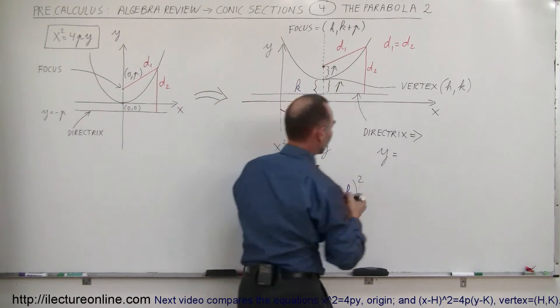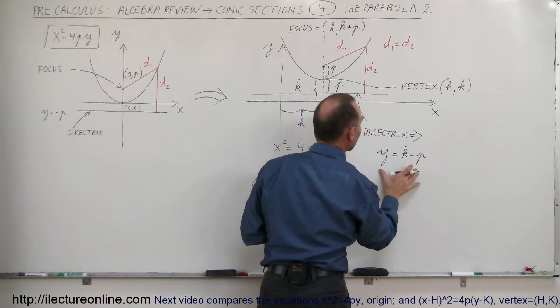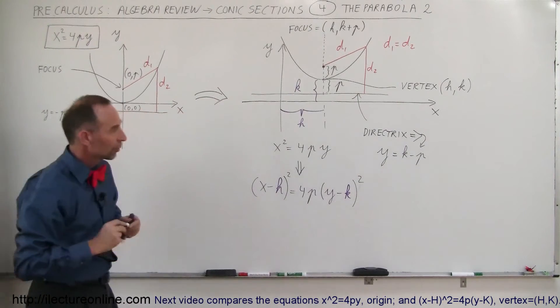So y is equal to k minus p, and that would be the equation for the directrix. So there we go, and we'll change the arrow direction there.